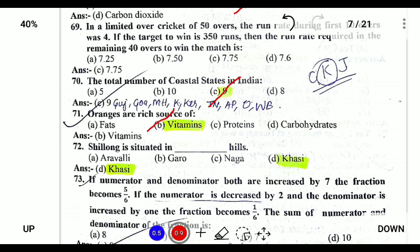Oranges are a source of Vitamin C, also known as ascorbic acid. Shillong is situated in the Khasi Hills.